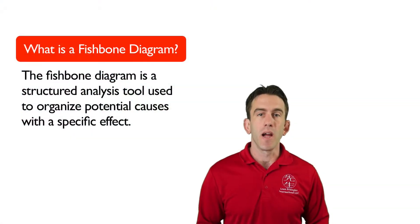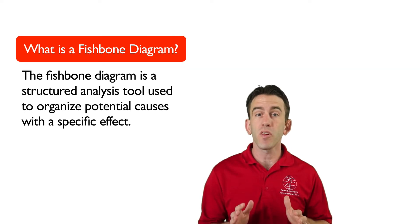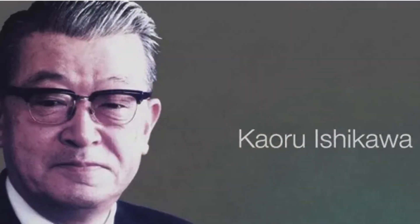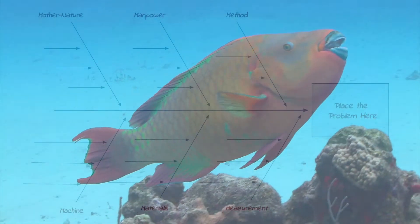The Fishbone Diagram is a structured analysis tool used to organize potential causes with a specific effect. This is where the name Cause and Effect Diagram came from. The tool was developed by Dr. Karu Ishikawa in the 1960s.